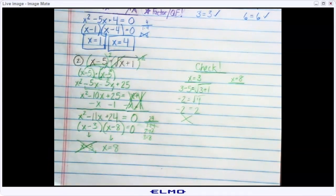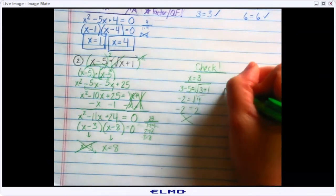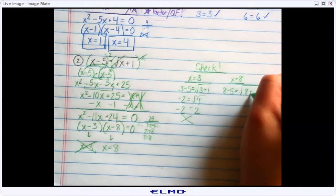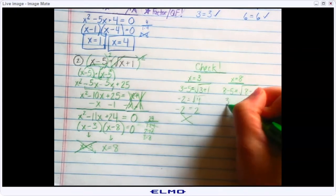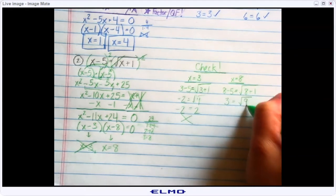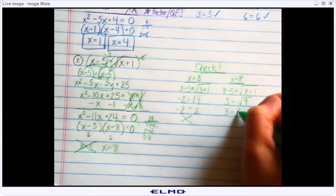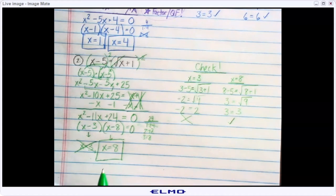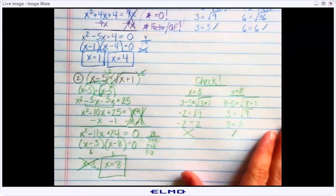On the other hand, let's check x equals 8: 8 minus 5 equals the square root of 8 plus 1. Well, 8 minus 5 is 3, and the square root of 9 — yes, 3 equals 3. So this is an example where only one of the answers ends up working out. It's also possible for neither answer to work out — if that were the case, you would just say no solution. That's it for solving radical equations. Hopefully these two examples made sense. Feel free to write down questions and talk with your teacher. Thanks for tuning in.